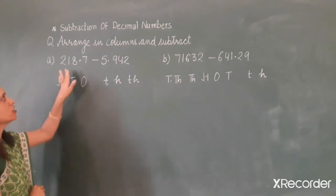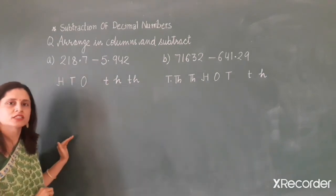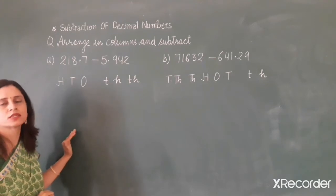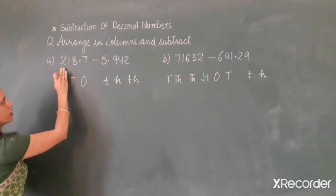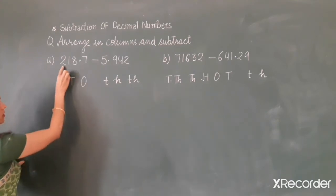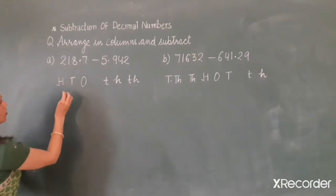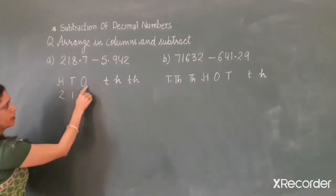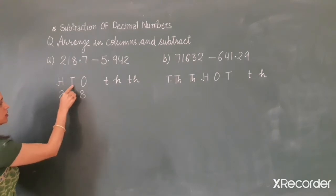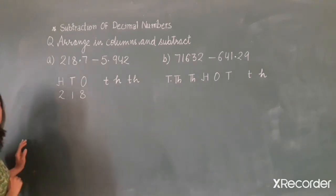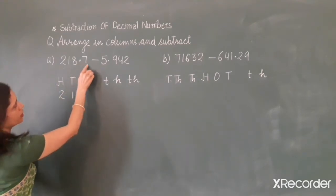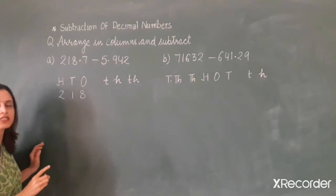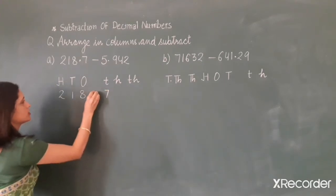First, we will arrange these two decimal numbers in columns. When we arrange the decimal numbers one below the other, the decimal points must be in a vertical line. So, we will arrange 218.7: digit 2 comes at 100's place, digit 1 at 10's place, digit 8 at 1's place. After the decimal point — the decimal part — digit 7 comes at the 10ths place. We put the decimal point here.